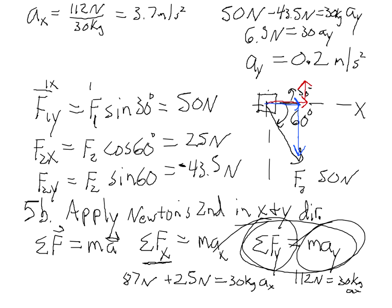So, we found the acceleration in the X direction and the acceleration in the Y direction. But we were looking for the magnitude of the acceleration. We'll use the Pythagorean theorem. The magnitude is the square root of the X component squared plus the Y component squared. That is 3.7 squared plus 0.22 squared and then you take the square root of that. You get about 3.71 meters per second squared.